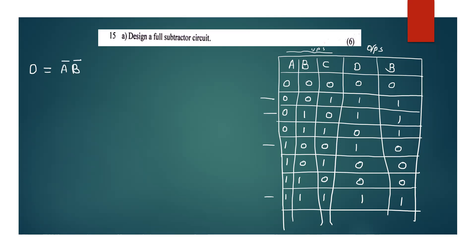The term is A-bar, B-bar, C plus A-bar, B, C-bar plus A, B-bar, C-bar plus A, B, C. These are the minterms forming the Boolean expression for the difference output.